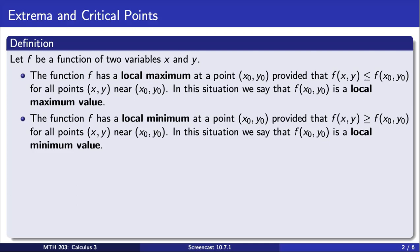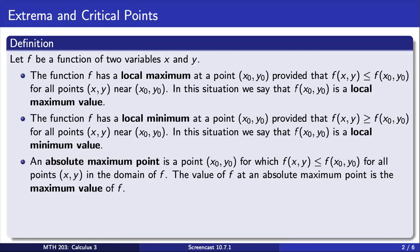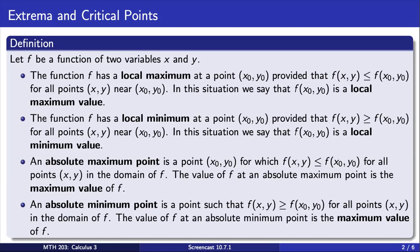We say that f has an absolute maximum point at (x₀, y₀), provided that f evaluated at this point is greater than or equal to f evaluated at all other points in the domain. In this situation, we say that the output f(x₀, y₀) is a maximum value. Note that an absolute maximum point is an input that gives the largest possible value of f. And finally, we say that f has an absolute minimum point at (x₀, y₀), provided that f evaluated at this point is less than or equal to f evaluated at all other points in the domain. In this situation, we say that the output f(x₀, y₀) is a minimum value. Note that an absolute minimum point is an input that gives the smallest possible value of f.